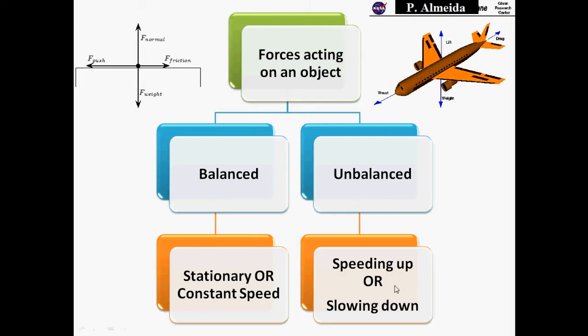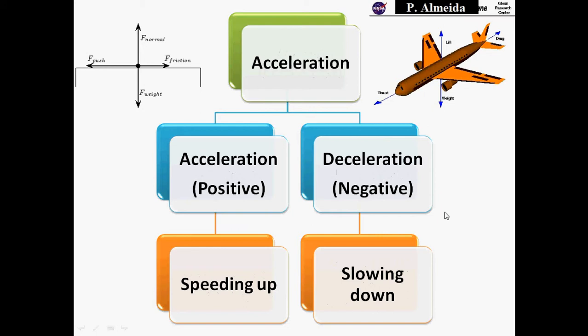Today we're focusing on speeding up or slowing down. When an object speeds up or slows down, the velocity is changing over time — we call that acceleration. Acceleration can be positive or negative. If I have positive acceleration, the resultant force is in the same direction as the motion and the object speeds up. If acceleration is negative — deceleration — the resultant force is in the opposite direction to the motion, so the object slows down.